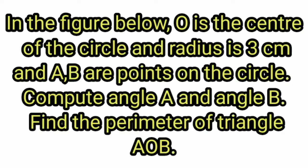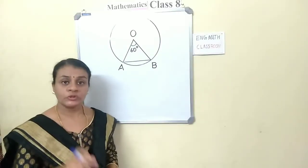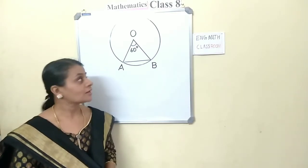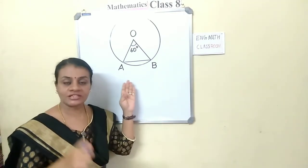The question is: in the figure below, O is the center of the circle and the radius is 3 cm, and A and B are points on the circle. Compute angle A and angle B, and find the perimeter of triangle AOB. Students, do you understand the question? This is the figure given in the question.